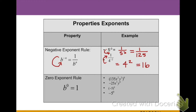Same thing here: 1 over 4 to the negative 2 power — since the negative exponent is on the bottom, we move it to the top. We get rid of the negative sign and make it 4 squared, which simplifies to 16.